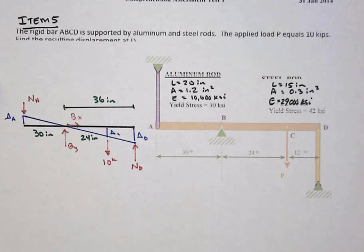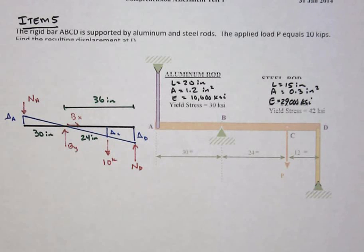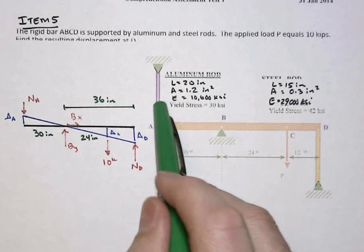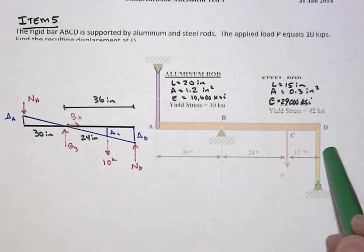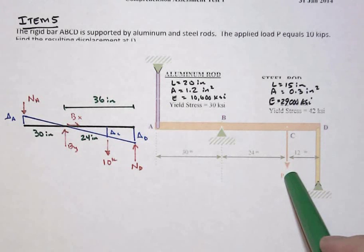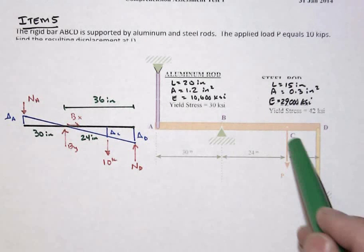In this fifth and final item on the spring 2014 exam number one, we have an axially loaded system that is statically indeterminate. We've got an aluminum rod connected at A, a steel rod connected at D, with an applied force of 10 kips at point C.